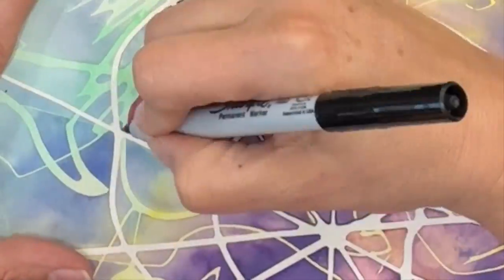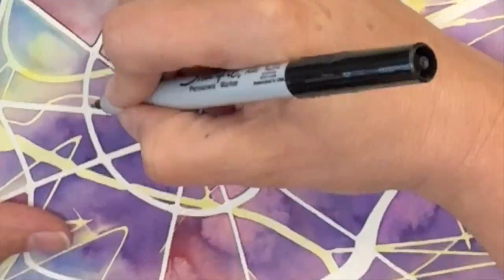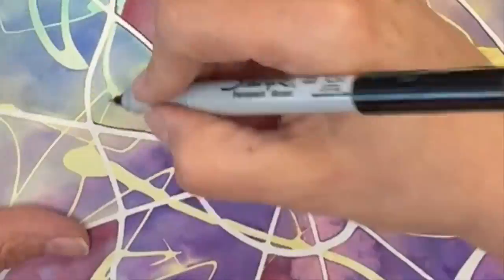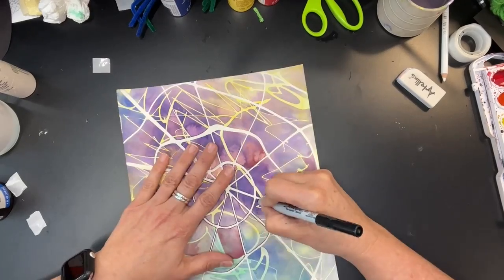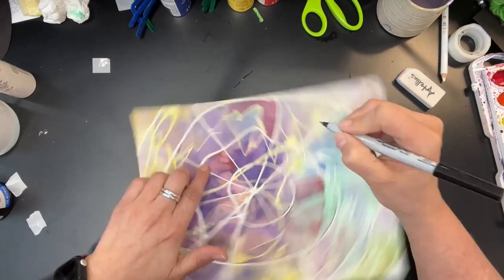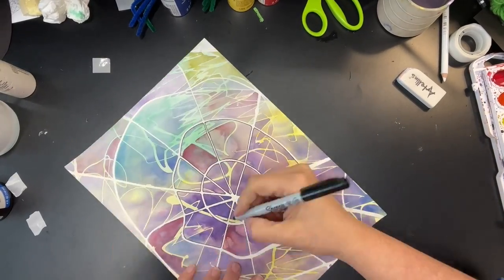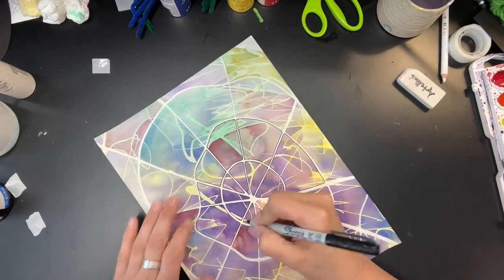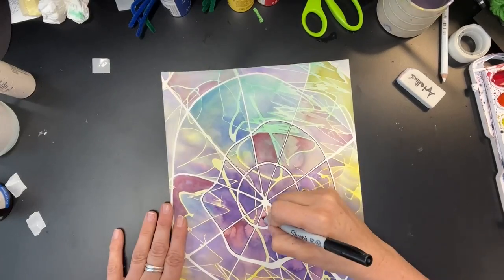Okay, I'm going to zoom back out so you can see how much I turn my paper and how much my hand stays in the same place. Look at this. Every time my line is going to change direction, I turn the paper. I do not move my drawing hand.